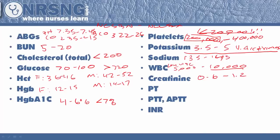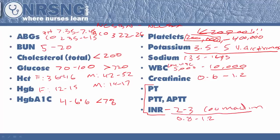For PT, PTT, APTT, and INR, you're most likely going to get a question about Coumadin therapy. For a patient on Coumadin, you want their INR to be 2 to 3. If they're not on Coumadin, the INR is about 0.8 to 1.2. For PTT, it's about 25 to 35 seconds not on therapy, and 2 times normal on therapy. So if a patient on Coumadin has a PTT of 70, that's about 2 times 35 — so we're okay with that.